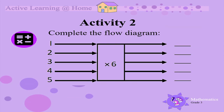Activity 2. Let's practice our 6 times table by completing the flow diagram. Let's do this together. 1 times 6 is 6. 2 times 6 is 12. 3 times 6 is 18. 4 times 6 is 24. And 5 times 6 is 30. Well done!